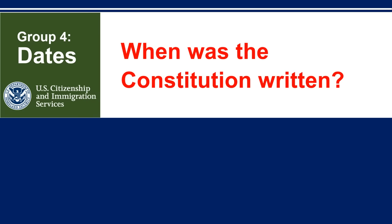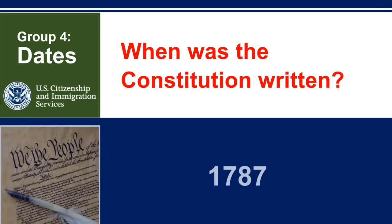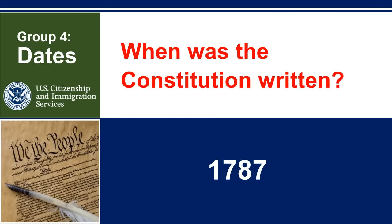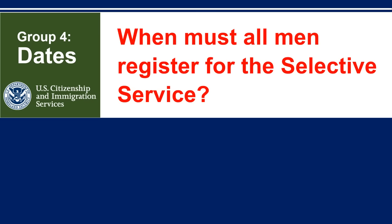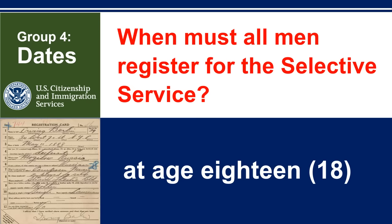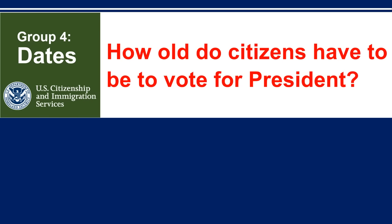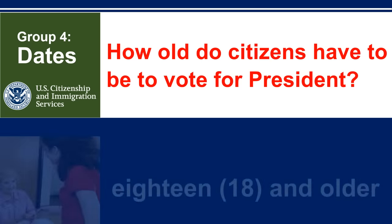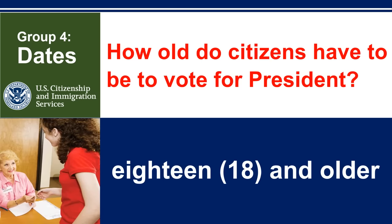When was the Constitution written? 1787. When must all men register for the Selective Service? At age 18. How old do citizens have to be to vote for President? 18 and older.